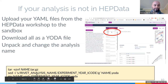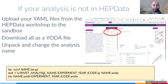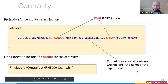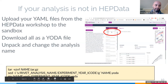You use the sed command to change the 'rivet_analysis_name' string inside the YODA file with your experiment, year, I, and InspireHEP number. Also rename the YODA file itself to match — EXPERIMENT_YEAR_ICODE.yoda. You then put this file inside your working directory on RCF. In the sed command: you replace the sandbox's garbled filename for the YODA file, and you replace the analysis name strings. The items in italics are the ones you replace.